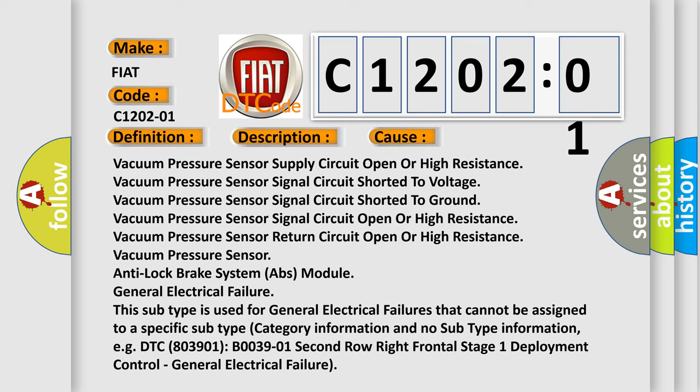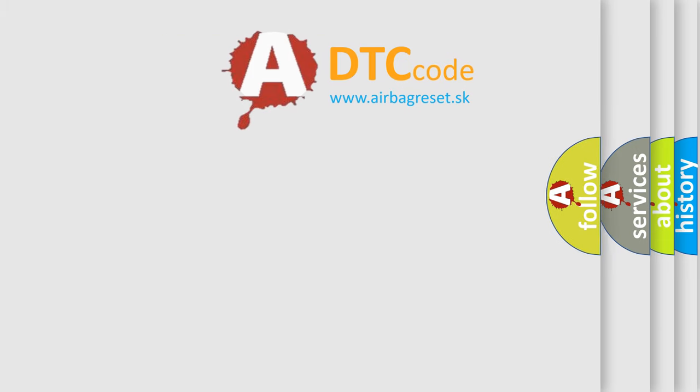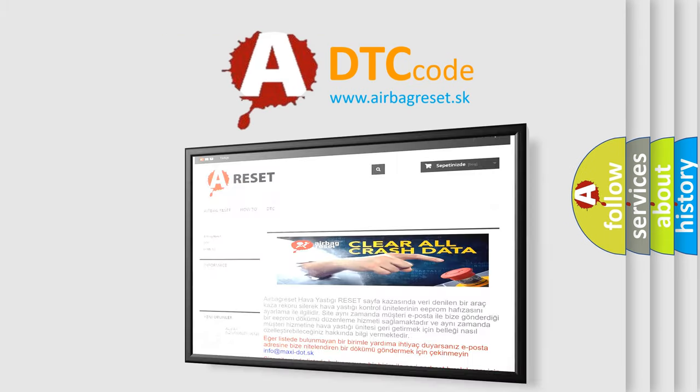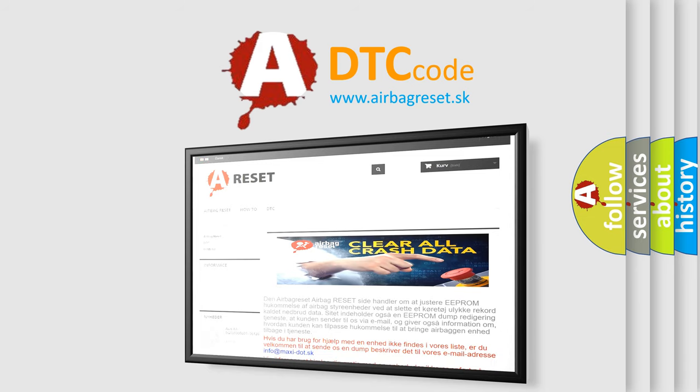DTC B03901, B00391, Second Row Right Frontal Stage 1 Deployment Control, General Electrical Failure. The Airbag Reset website aims to provide information in 52 languages. Thank you for your attention and stay tuned for the next video.